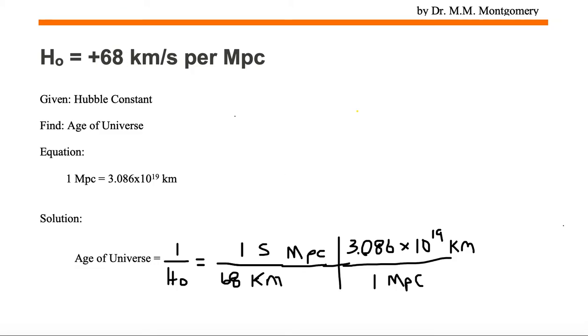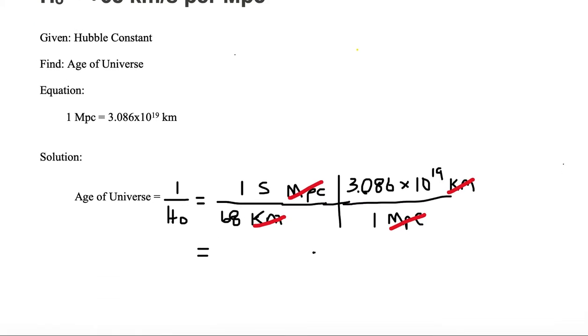So let's get rid of like units. We've got megaparsecs on the top, megaparsecs on the bottom, kilometers on the top, kilometers on the bottom. So the only units we have left are going to be seconds. Now we have 3.086 times 10 to the 19th divided by 68.